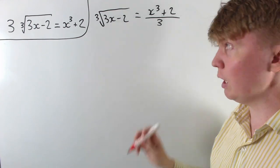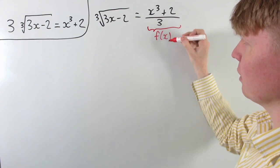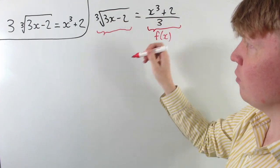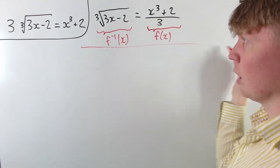And it turns out that actually if we define the right hand side as a function, so we say that this is f of x, then the left hand side is actually the inverse function of this, this would be f inverse of x, and you can check this if you like.